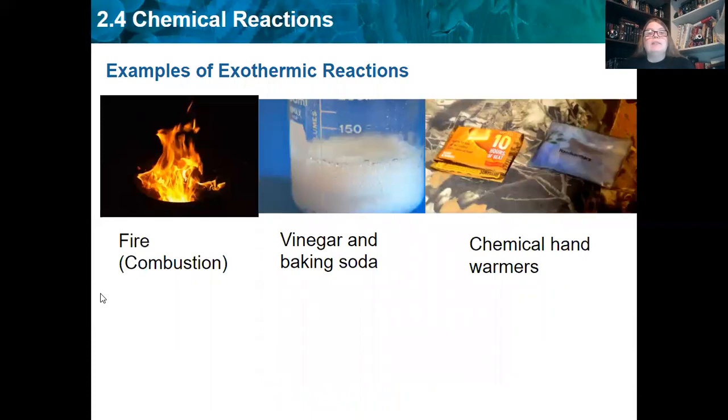So here's some examples of exothermic reactions. Combustion is always exothermic. If when the reaction is happening, it feels hot to the touch, it is exothermic. So vinegar and baking soda actually releases heat. It's a little bit warm when you touch it. And then chemical hand warmers, like hot hands, when you're out hunting or whatever, you're able to break the little thing inside of it and it mixes the two chemicals and it releases heat because it's an exothermic reaction.